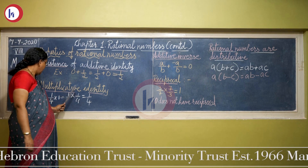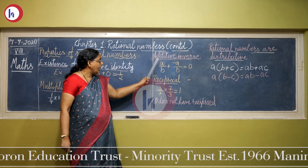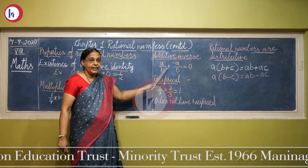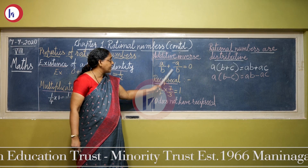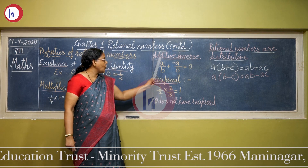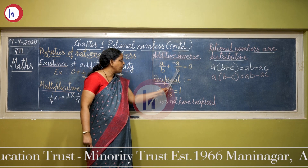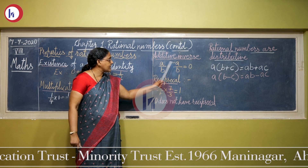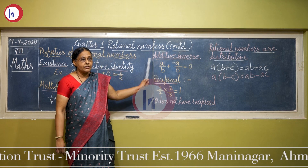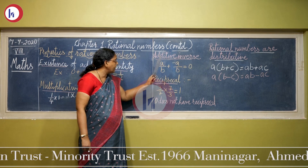Now, additive inverse: a/b + (−a/b) = 0. When two rational numbers are opposites and added together, you get 0. The additive inverse of a/b is −a/b, and the additive inverse of −a/b is a/b. For example, the additive inverse of 3/4 is −3/4. This is also one of the important properties of rational numbers.